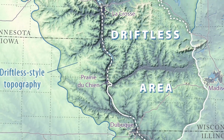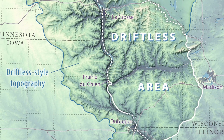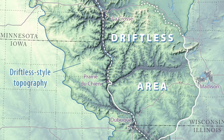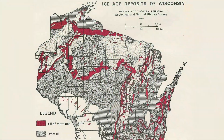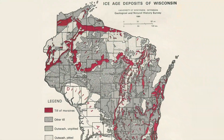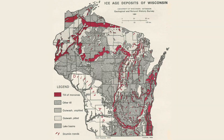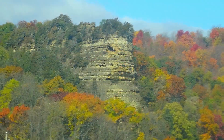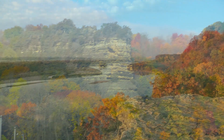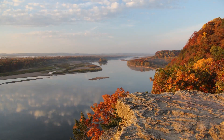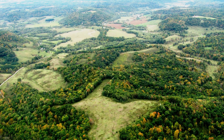It may include very small slivers of southeast Minnesota, northeast Iowa, and certainly includes the northwest corner of Illinois. While the rest of Wisconsin was covered by multiple huge ice sheets over the last 2.5 million years, this large area of southwest Wisconsin provided a refuge for life and preserved pre-glacial landforms and waterways.